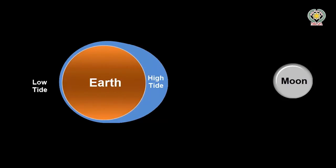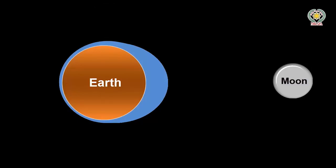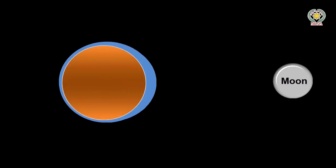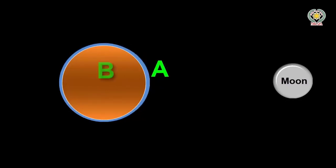So you'd expect one high tide each day, but there are actually two high tides a day. This is because the strength of gravity is greater when objects are closer. We'll call the location of the ocean on the near side of the moon point A, at the centre of the Earth point B, and at the far side ocean point C.